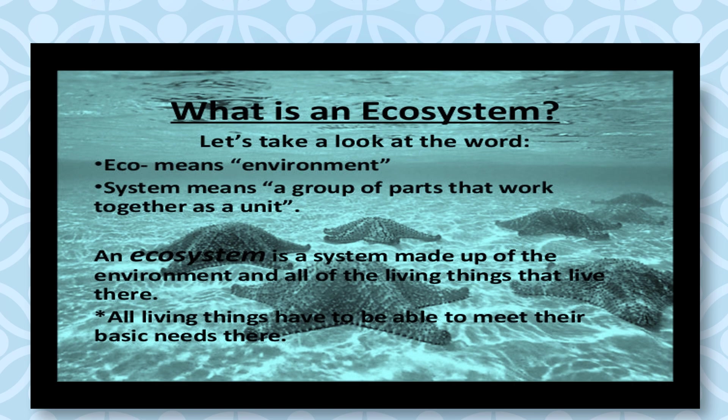What does ecosystem mean? 'Eco' means environment, and 'system' means a group or a part that works together as a unit. An ecosystem is a system which is made up of the environment and all the living things that live there. All living things have to be able to meet their basic needs — as human beings we need food, animals also need food, and plants get what they need from the environment.